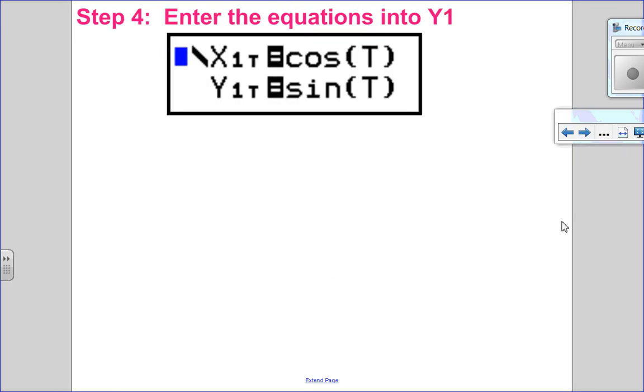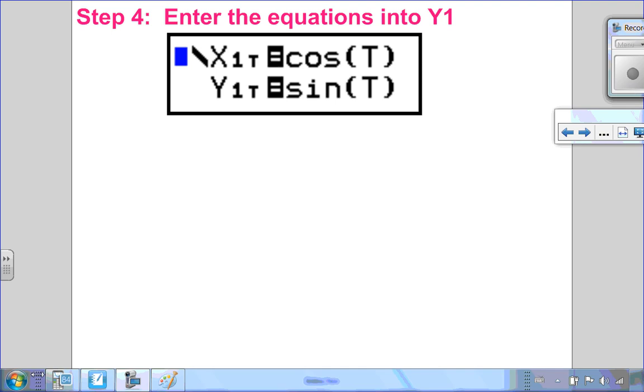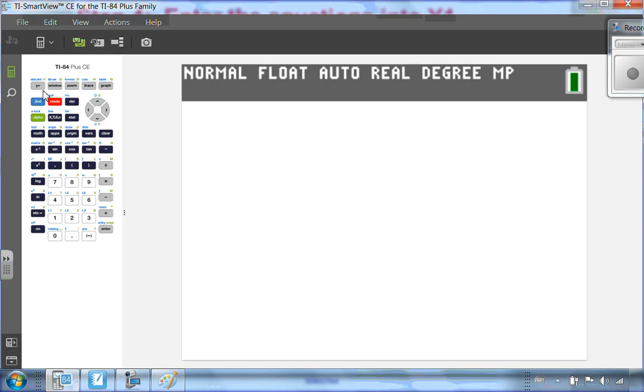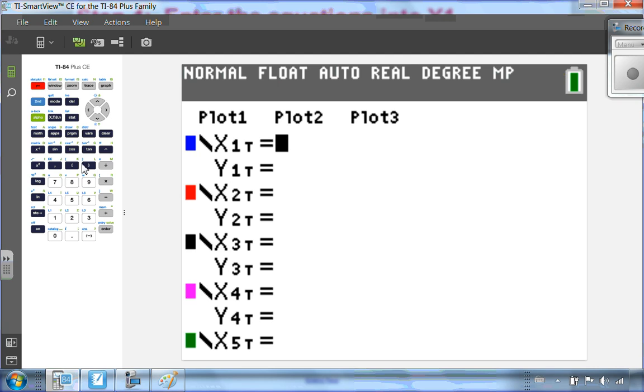Step number 4, put the equations into my y equals. So just like on the unit circle, x is cosine and y is sine. I'm going to put those into my graphing calculator. So go into my y equals and x is cosine. So I'll enter in cosine of my variable key, which is t because it's a parametric equation. And for y, I'll enter in sine and my variable key, which will be t, enter.